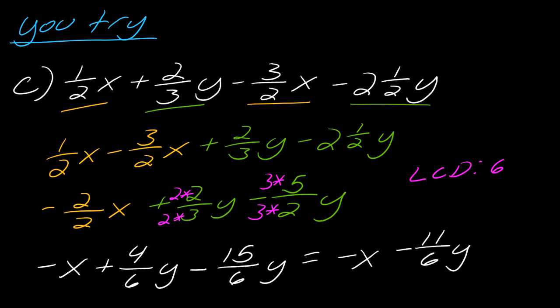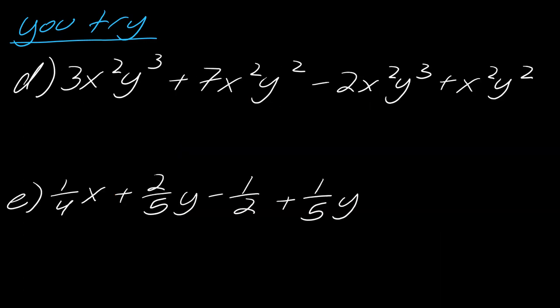This is going to be 4 minus 15, all of that over 6. So this is going to be -x - 11/6 y. So that was a little bit of work, it was definitely tricky. Sometimes you might have to find a common denominator for one of the letters, and sometimes you might not. In this case with the x's we didn't have to find a common denominator, but with the y's we did. So I have just two more here if you want to try two more. You can go ahead and pause the video and then hit play when you're ready.